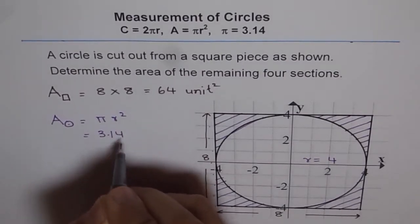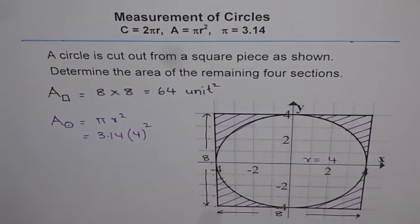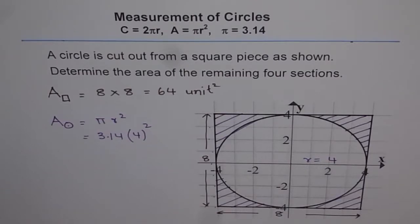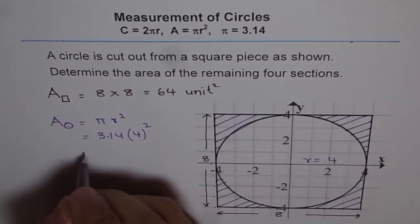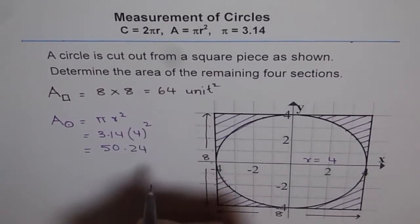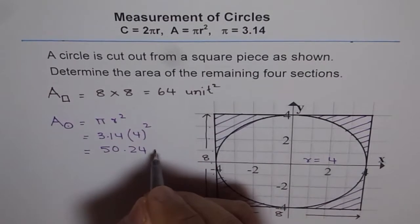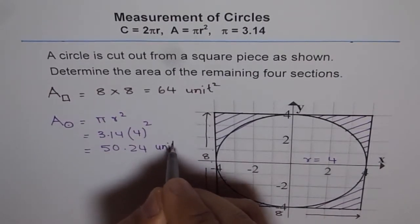we can write 3.14 times 4 square. And now you can use the calculator. 3.14 times 4 square is 16. You get 50.24. And units will be square, because r is square. So unit square.